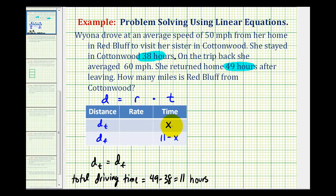So if she spent 4 hours driving to Cottonwood, 11 minus 4 would be 7 hours driving from Cottonwood. Now let's look at the rates. For the trip to Cottonwood, she averages 50 miles per hour. And on the trip from Cottonwood, she averages 60 miles per hour.